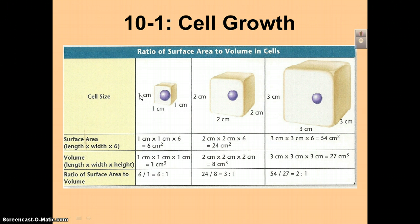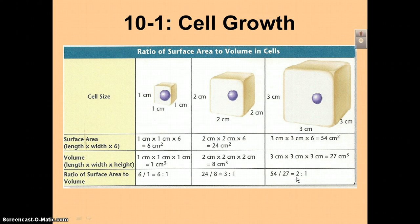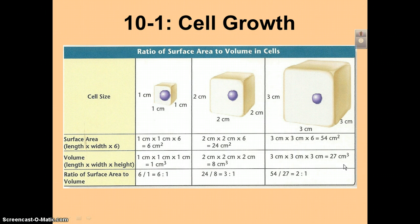You might think a larger surface area is better, but look at the volume. For the small cell, one times one times one equals one. For the large cell, three times three times three is 27 — 27 times bigger. Comparing the ratios: the small cell's surface area is six times bigger than its volume, while the large cell's surface area is only two times bigger than its volume. As a cell gets larger, volume increases much more rapidly than surface area, which is why the ratio drops so much. Smaller is better — you want a really large surface area relative to volume.